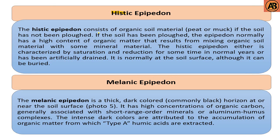The next one is the histic epipedon. The histic epipedon consists of organic soil material — peat or muck. If the soil has not been plowed, this epipedon normally has a high content of organic matter resulting from mixing organic soil material with some mineral material. The histic epipedon is either characterized by saturation and reduction for some time in normal years, or has been artificially drained. It is normally at the soil surface, although it can be buried.